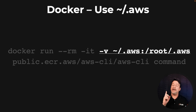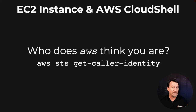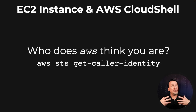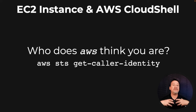Okay, great. But now here's a question. There are other ways to run the AWS CLI, in particular on an EC2 instance or in Cloud Shell. What are you contextually in terms of security when you run that? Well, that's where the STS get-caller-identity command comes in. It lets you see who you're actually logged in as.